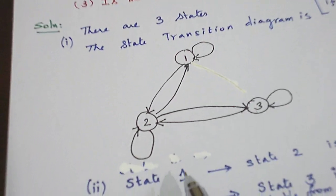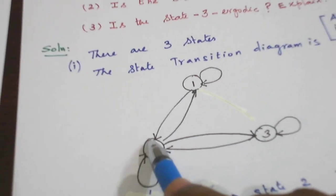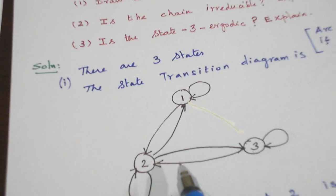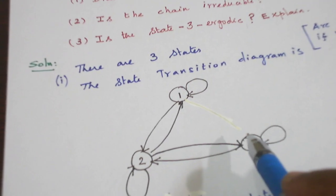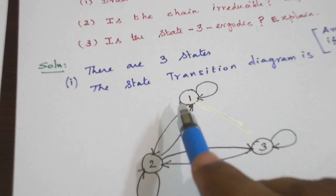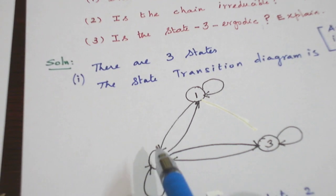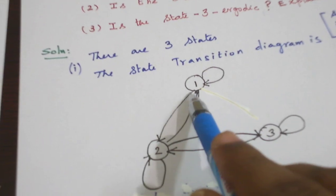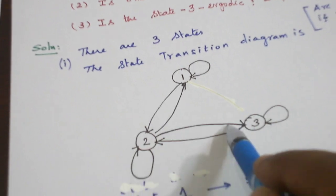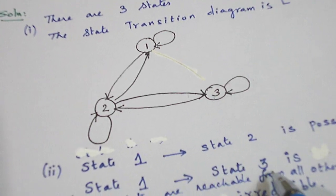State 1 to 2 is it possible? Yes, direct arc is there. State 1 to 3 even though there is no direct arc, we can reach from state 1 to 3 via the state 2. State 1 to 2, 2 to 3. So state 1 to 3 is reachable.